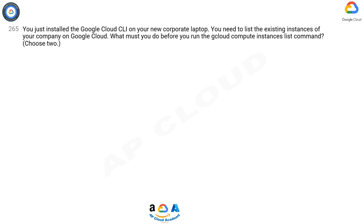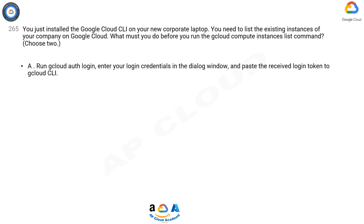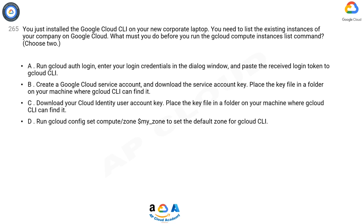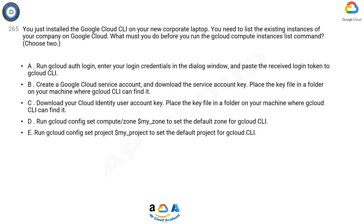Choose 2. A. Run Cloud Auth Login, enter your login credentials in the dialog window, and paste the received login token to Cloud CLI. B. Create a Google Cloud Service Account, and download the Service Account key. Place the key file in a folder on your machine where Cloud CLI can find it.